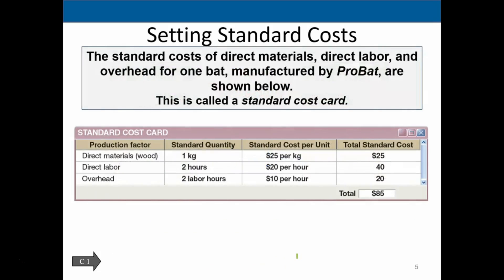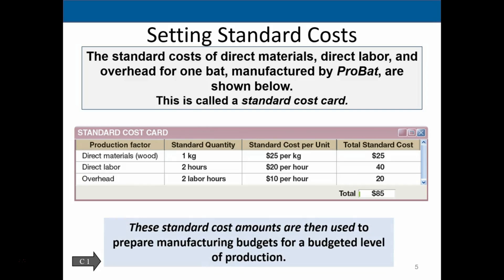The standard cost card for one bat manufactured by ProBat is shown. For direct materials, the wood has a standard quantity of one unit at a standard cost of $25. For direct labor, we have two units multiplied by $20, giving us the labor standard cost. For overhead, we use two labor hours at $10 per hour, giving us $20. The total standard cost comes to $85 per bat.